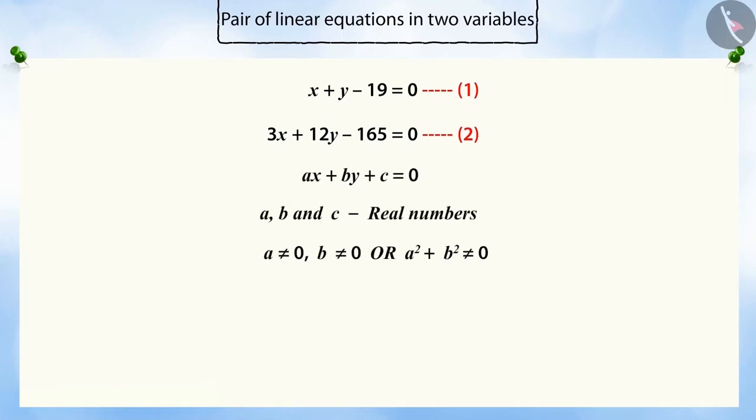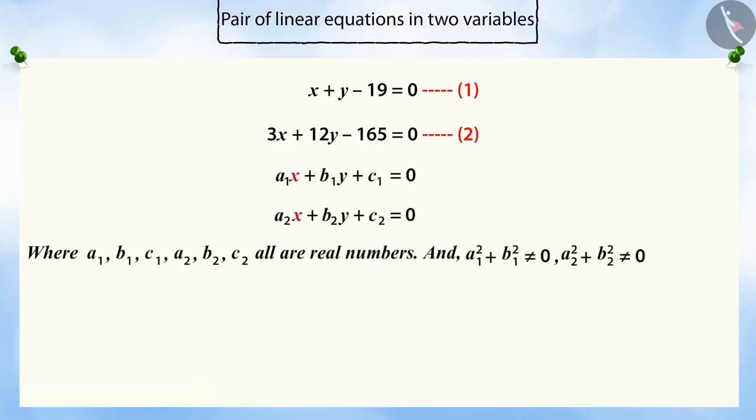We know that in two variables, x and y, a into x plus b into y plus c is equal to 0. Hence, the pair of linear equations in the two variables, x and y, can be represented in a comprehensive way.